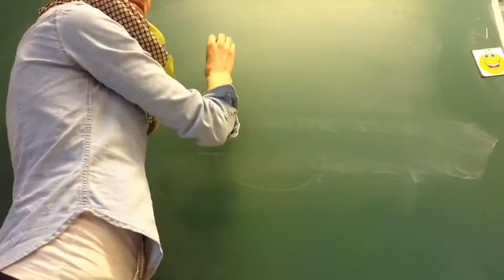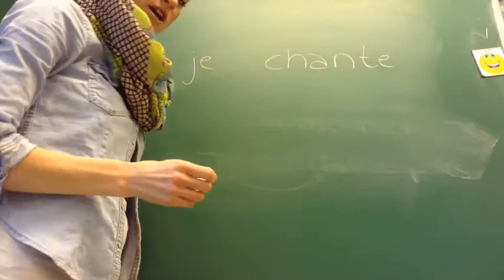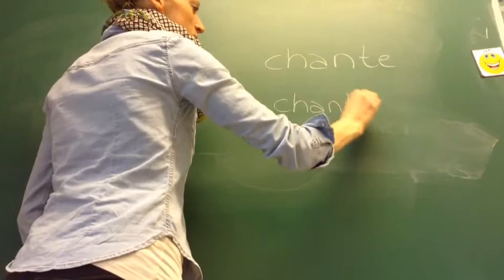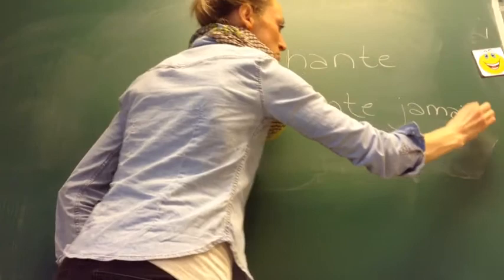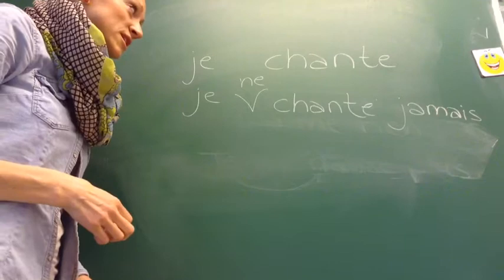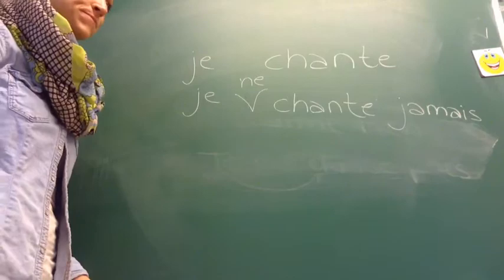Det vigtigste med de her nægtelser er bare, at I husker, at vi skal ned omkring verbet. For eksempel 'jeg synger' – 'jeg synger ikke' eller 'jeg synger aldrig'. Så er det, at vi skal huske at skrive ne. Hvis man skriver det, skal man huske at skrive ne. Det behøver man ikke at sige i mundtligt sprog, men i skriftsprog er det altid vigtigt at have med. Ellers tror lærerne bare, at man ikke ved, at ne hører med i nægtelsen.